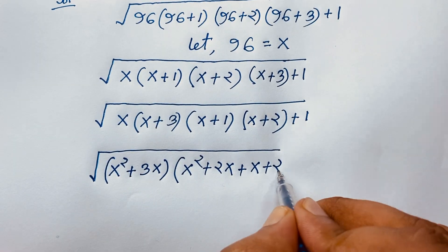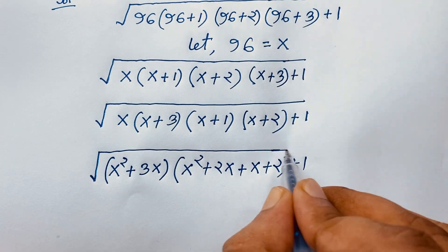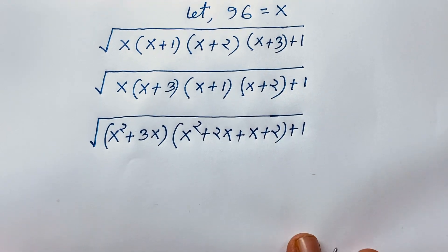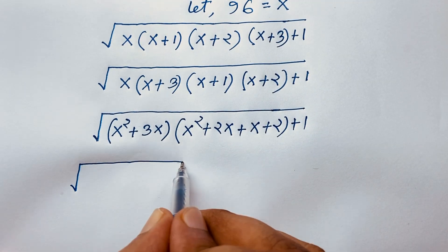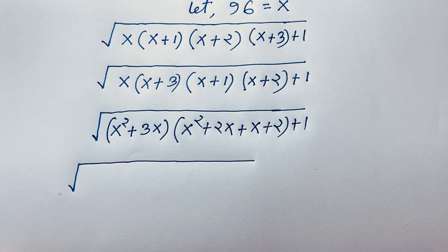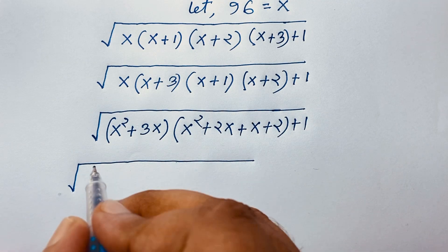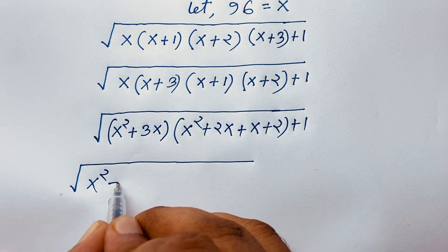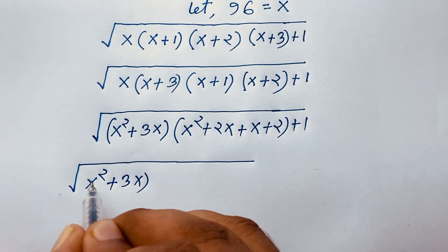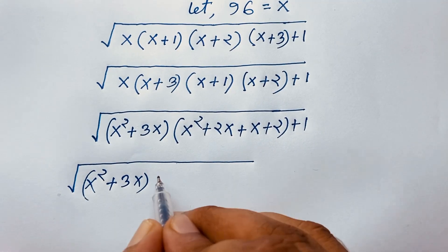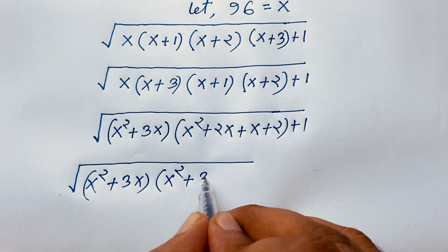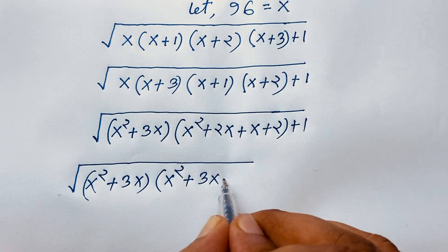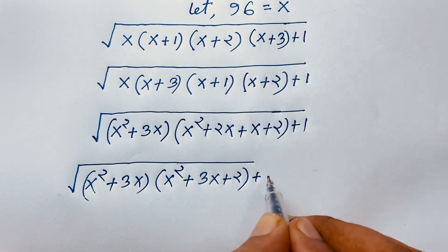This gives us x squared plus 3x for the first pair, and x squared plus 3x plus 2 for the second pair, plus 1. So we have square root of (x²+3x) times (x²+3x+2) plus 1.